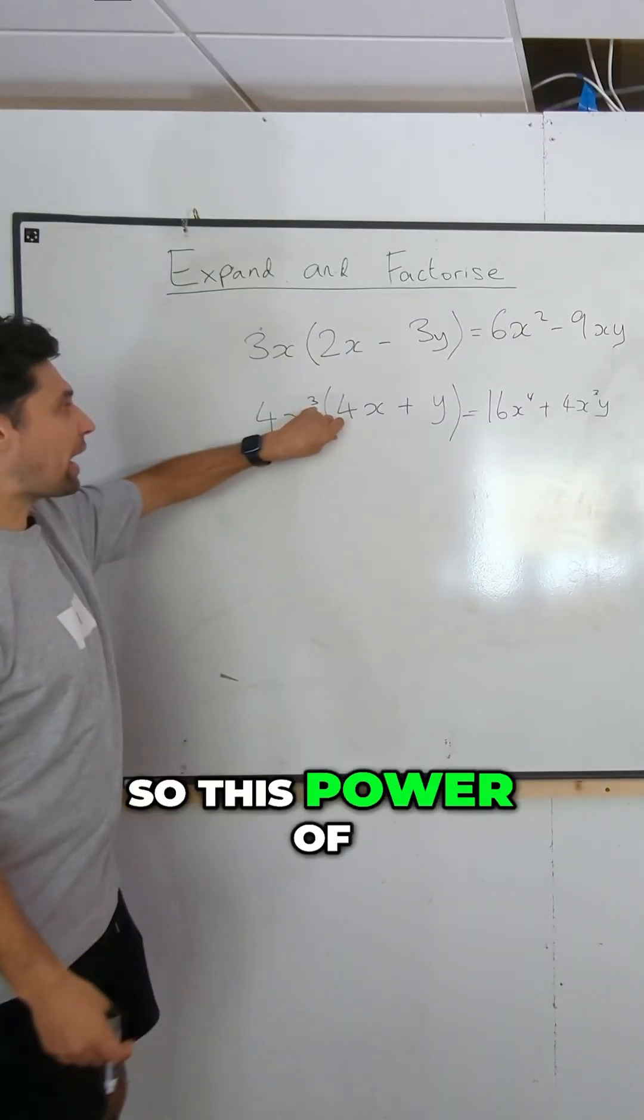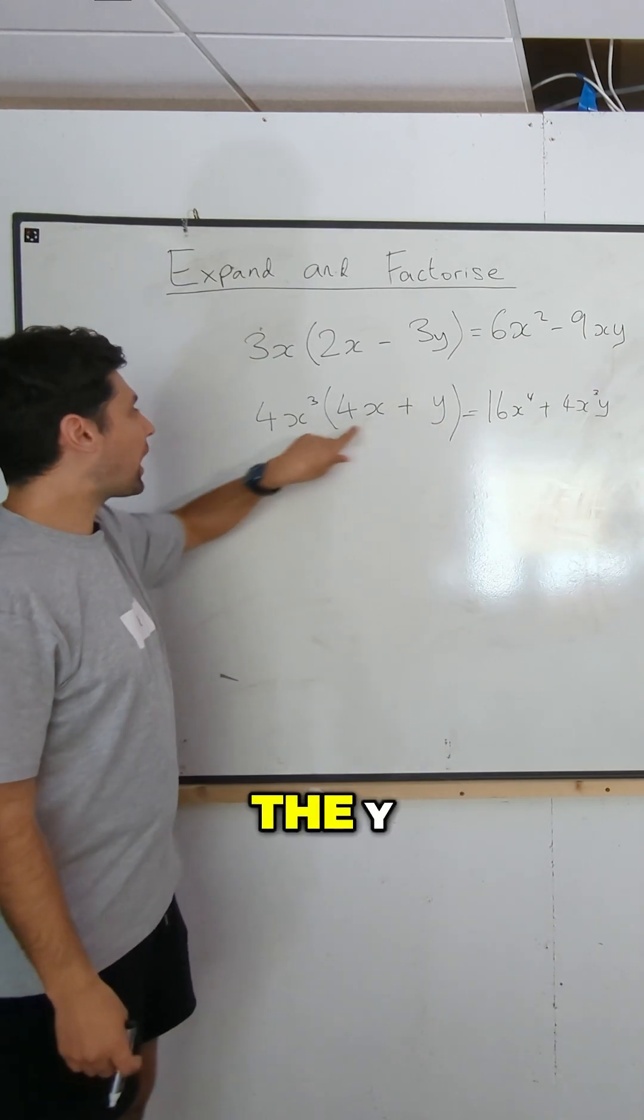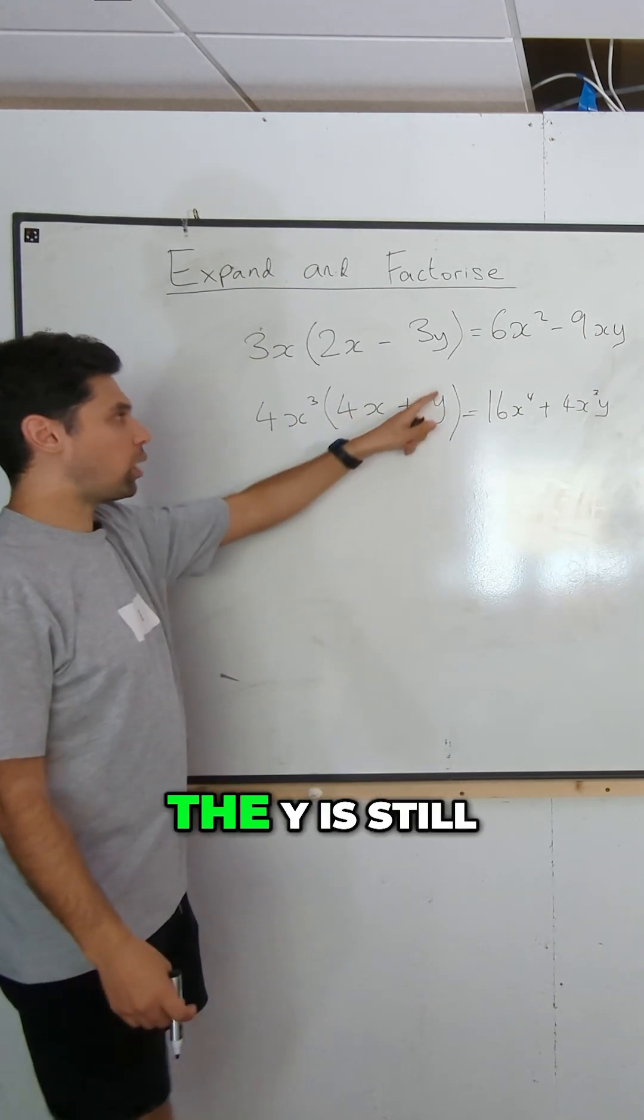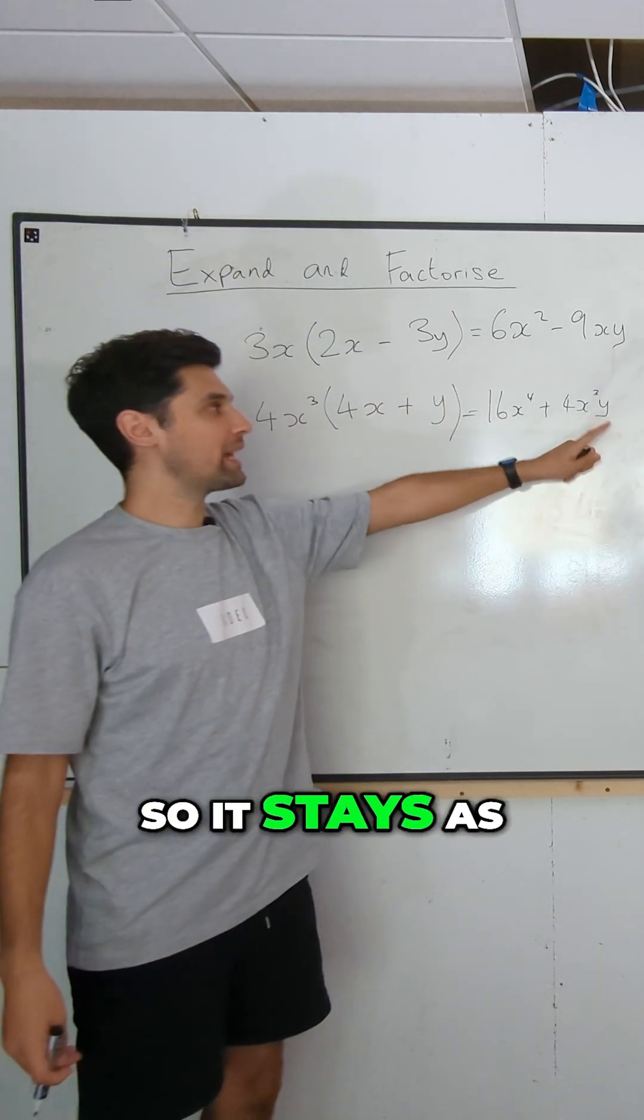So this power of 3 belongs to the X. When it combines with the Y, the power does not combine. The Y is still just Y to the power of 1, so it stays as Y to the power of 1.